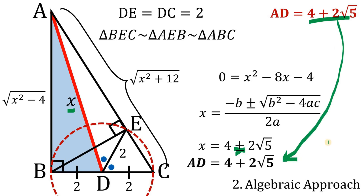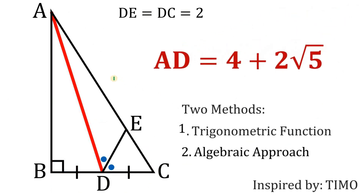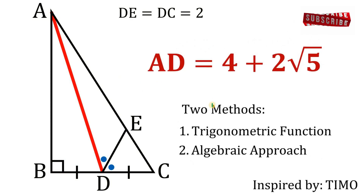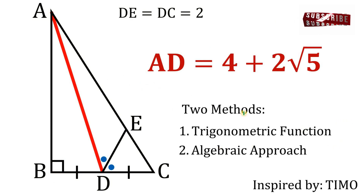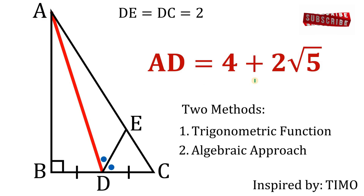Using both methods — trigonometric and algebraic — we get that the length of AD equals 4 plus 2 times the square root of 5. And as always, we are done.